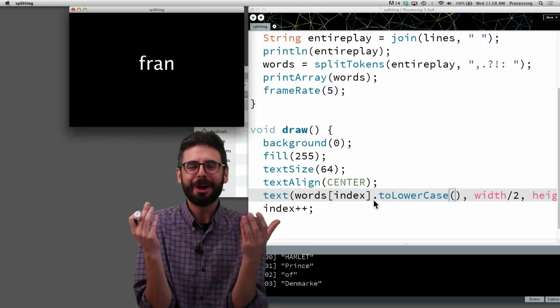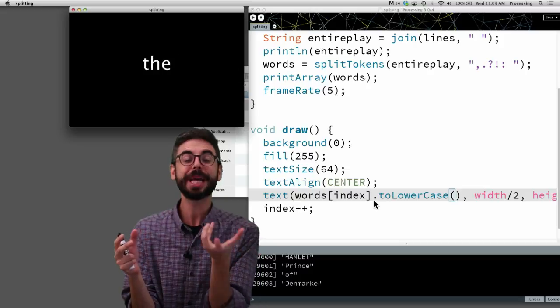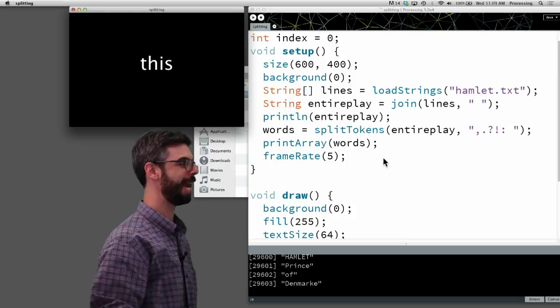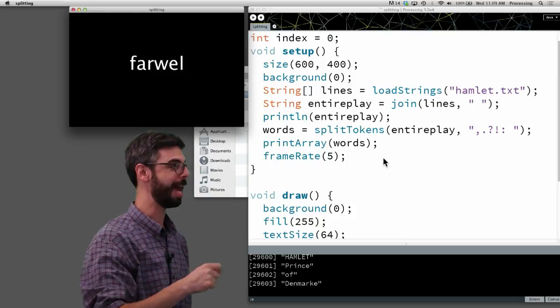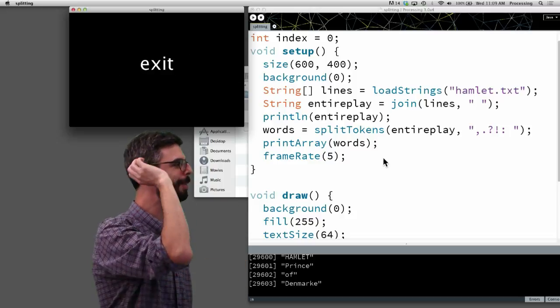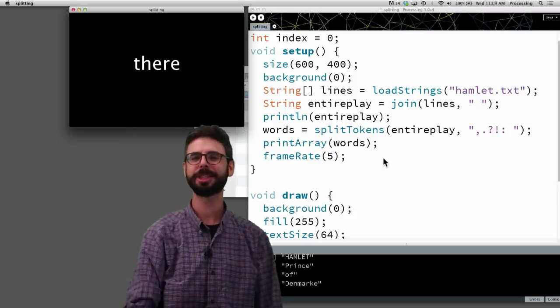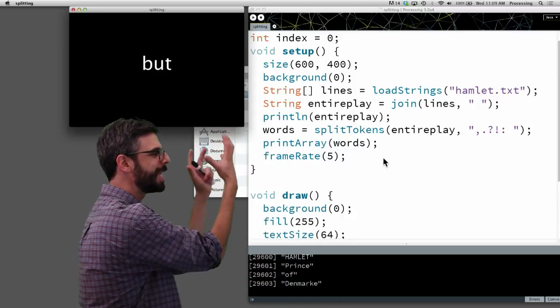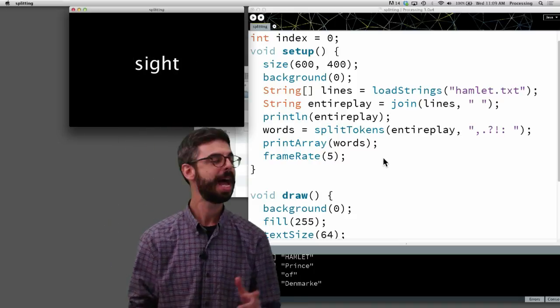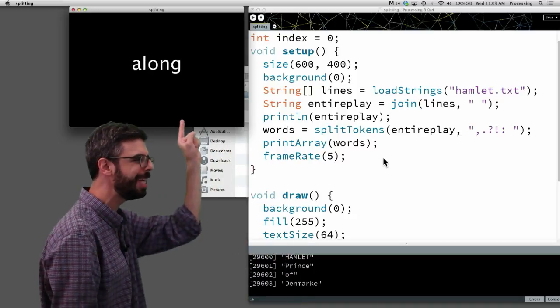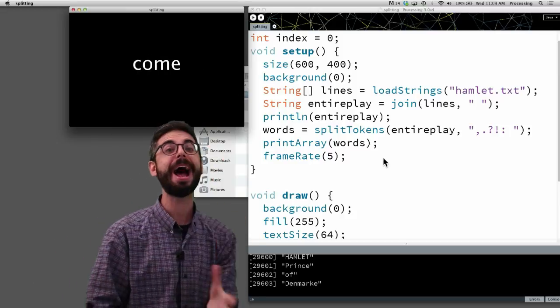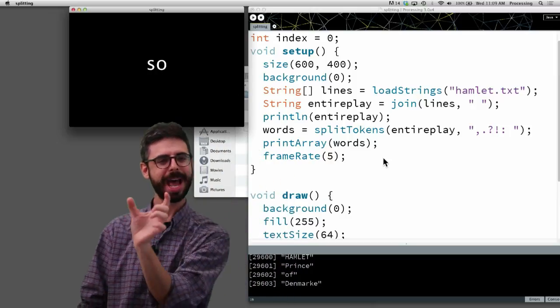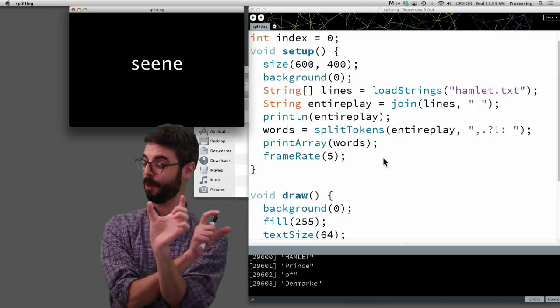So I think this really wraps up this particular scenario. What this video, what I intended this video really to cover, is simply how the loadStrings function works. So what I would suggest to you is find some text. Maybe it's comma separated numbers and you want to draw a graph by using split and a comma. Maybe find something else on Project Gutenberg or find something you wrote or get all of your emails into a text file. Do some type of visualization based on the stuff that's in a text file.